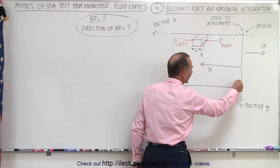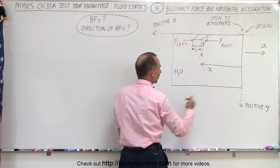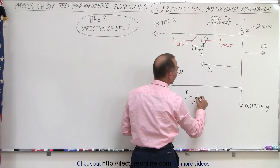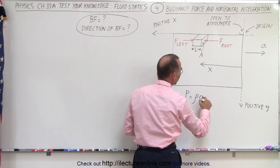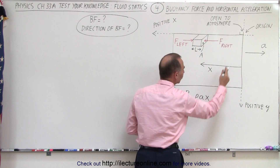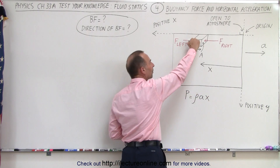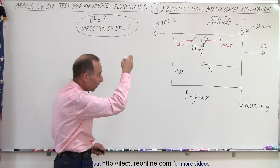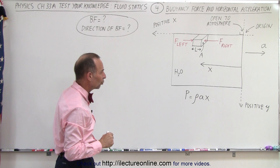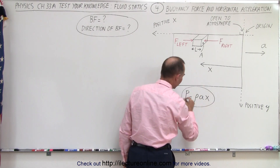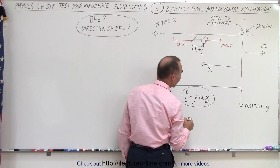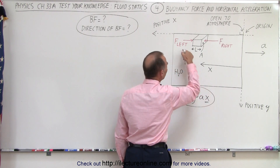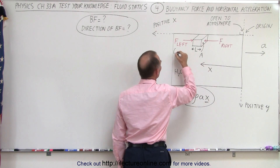We know that pressure increases as X increases. From the previous video, the pressure in the horizontal direction is equal to the density of the liquid times the acceleration of the tank times the distance X from the right side — and that's at the top. Anywhere below the surface, we also add the pressure from the weight of liquid above. Since pressure is a function of X, and assuming constant acceleration and density, greater X means greater pressure. Therefore, the force on the left must be larger than the force on the right.